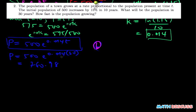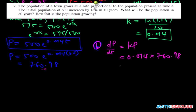I'm going to rewrite dp/dt equals kp. Our k is 0.014, so that is 0.014 times p. The population in 30 years is 760.98, so 0.014 times 760.98 gives us 10.65 persons per year. This is the rate at which the population is growing at 30 years.